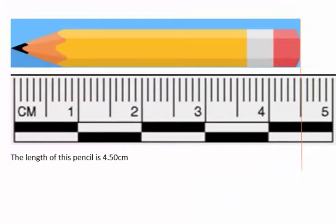Here's another example using the same ruler. In this case, the length of the pencil lines up with a graduation, and so this length is recorded as 4.50.